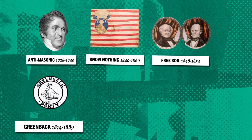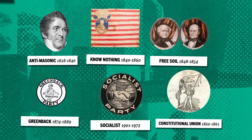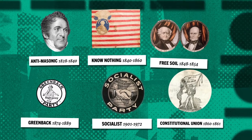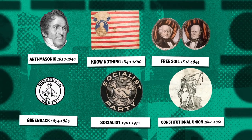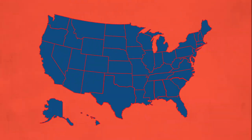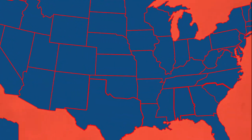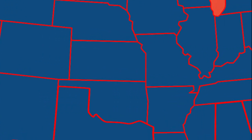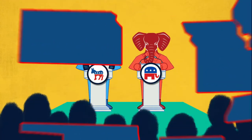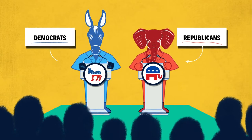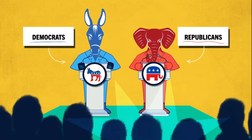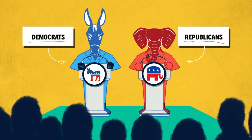Since 1776, over 100 political parties have come and gone. Now the country is divided into two major parties, the Republicans and the Democrats. But where do those parties come from?